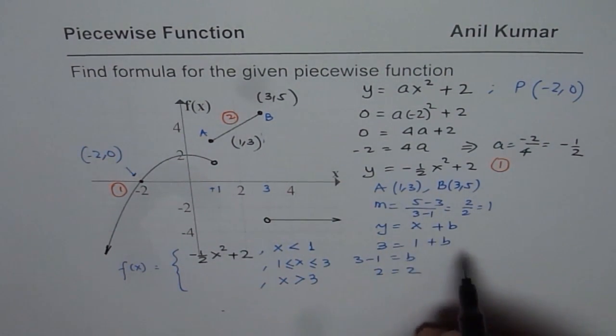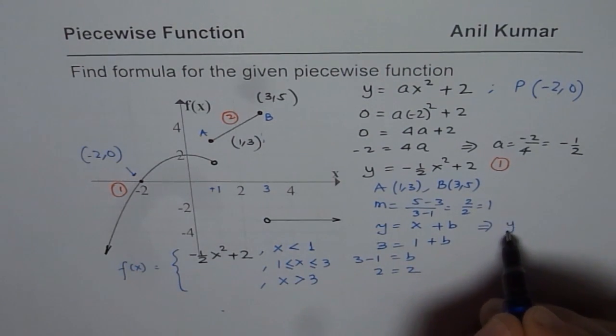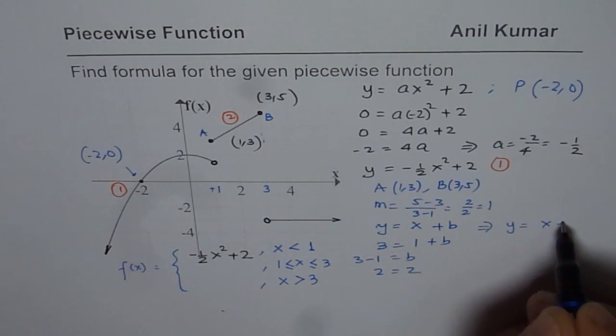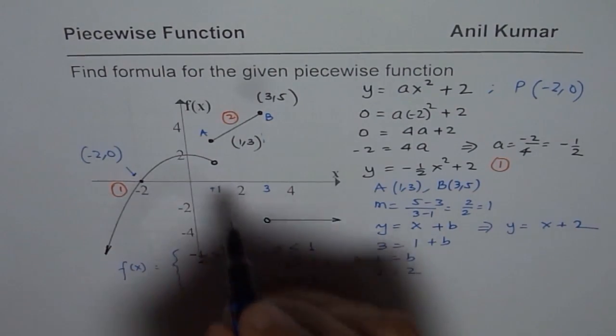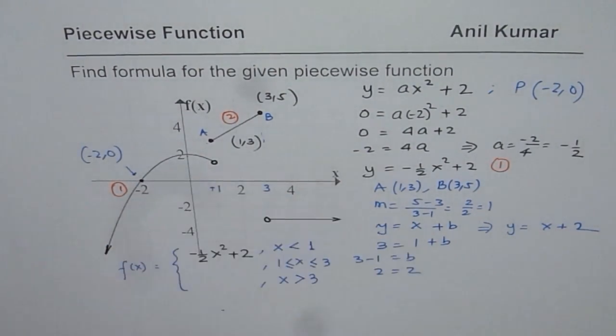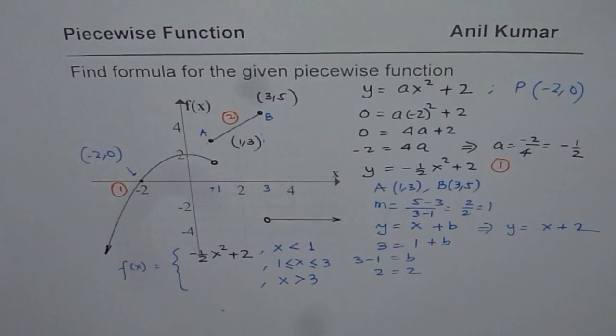Since b is 2, we can write down the equation here as y equals to x plus 2. That makes sense. If you extend this line kind of, it has a y-intercept of 2. It has a slope of 1, so that works.